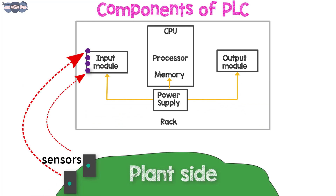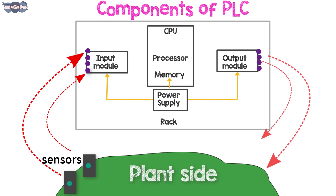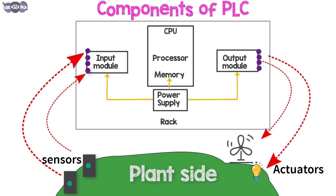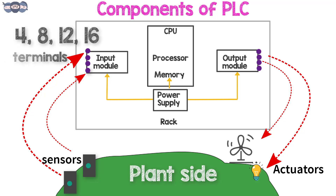The output module has terminals to which output signals are sent to activate solenoids, motors, heaters, displays, etc. Typically there are four, eight, twelve, or sixteen terminals per module.